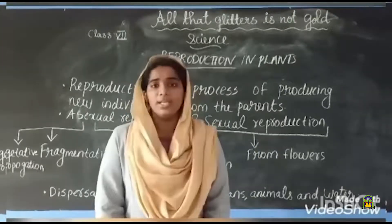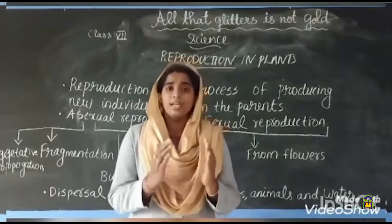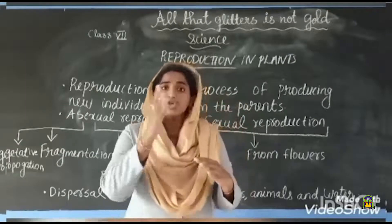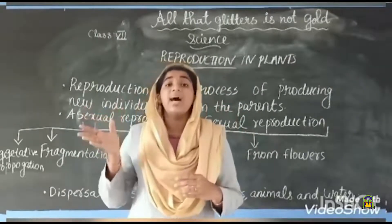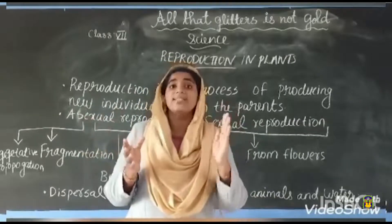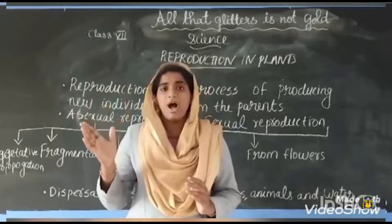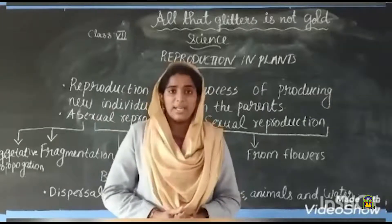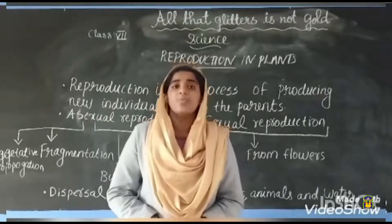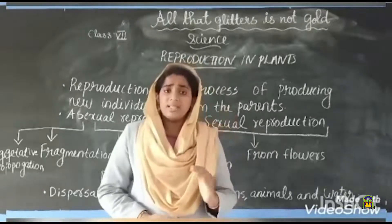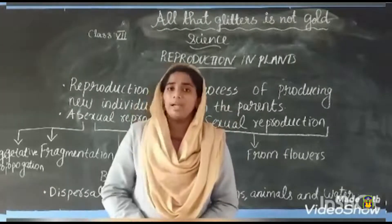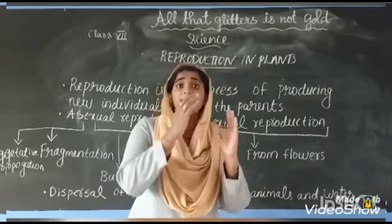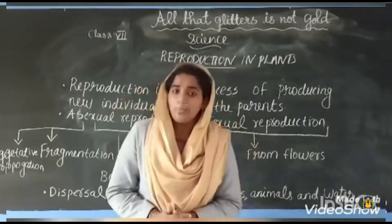After that we discussed about pollination. What is pollination? Pollination is the process of transfer of pollen grains from the anther to the stigma of the pistil. There are two types of pollination: self-pollination and cross-pollination. Stamen is the male reproductive part and pistil is the female reproductive part.